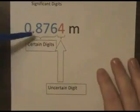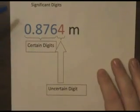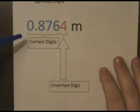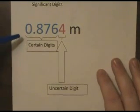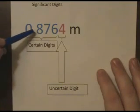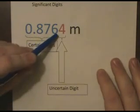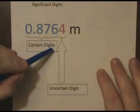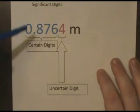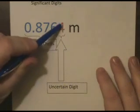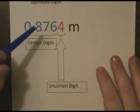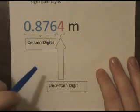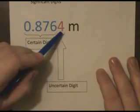If we take a look at this measurement of 0.8764 meters, if the measurement has been made properly, anyone else viewing this measurement understands that the first three significant digits are all certain digits according to the measuring device that was used. And the one tacked on to the end that is the uncertain digit is where the user of that instrument estimated between the markings.